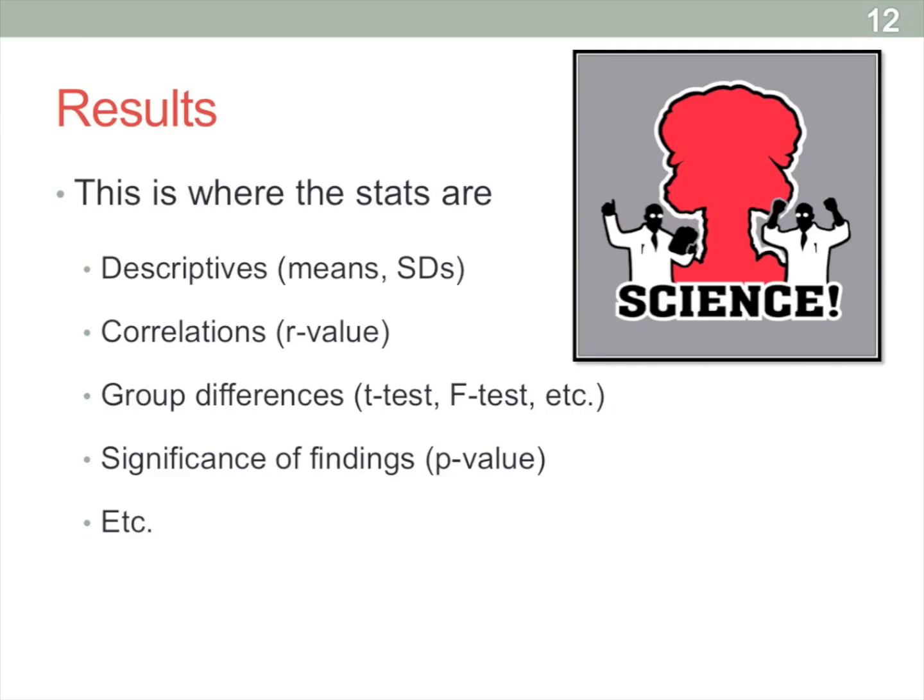And of course, the significance of the values, the p-values. So obviously, if the p is at 0.05 or below, then you're going to be having significant findings. If it's above 0.05, then they're non-significant findings.